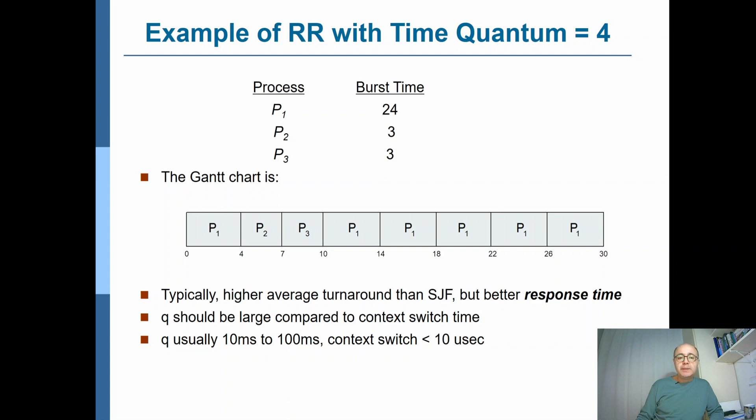We can say Q should be large enough compared to the context switch time because the context switch time introduces an overhead. And typically, as we said, the time quantum length is between 10 to 100 milliseconds in most modern operating systems. And the context switch time is typically 10 microseconds. So there is actually something like a factor of 1000 there, approximately.